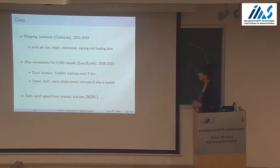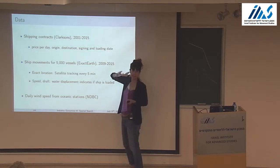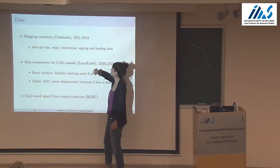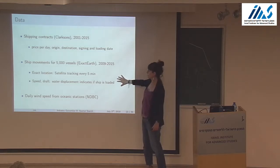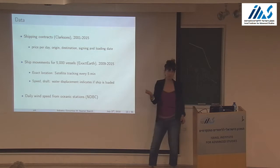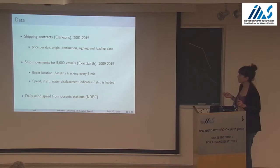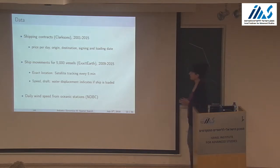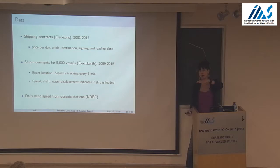The data involves first a dataset of contracts — like taxi trips, we know how much was paid per day for a particular origin-destination pair, the signing date, loading date, the ship, and the exporter. The second dataset is ship movements for about 5,000 ships — half the world fleet — where satellite data gives the exact location of every ship every five minutes.